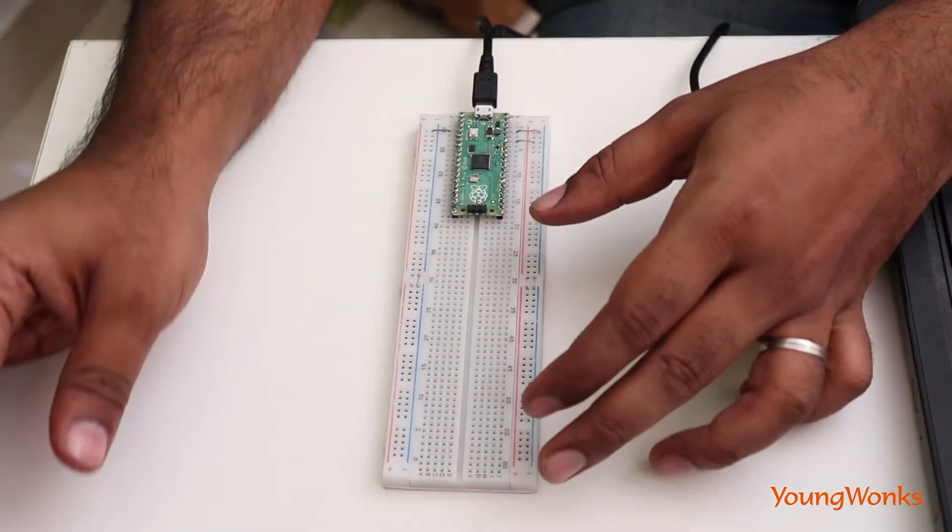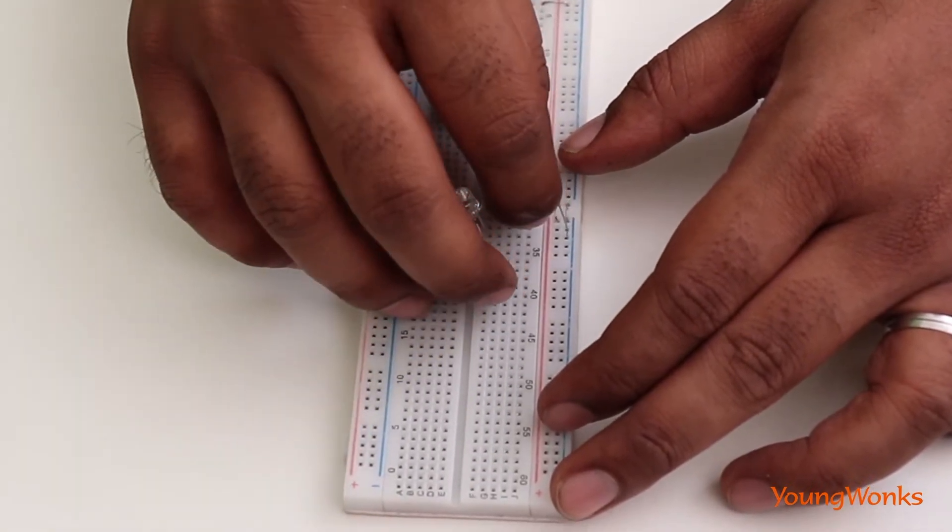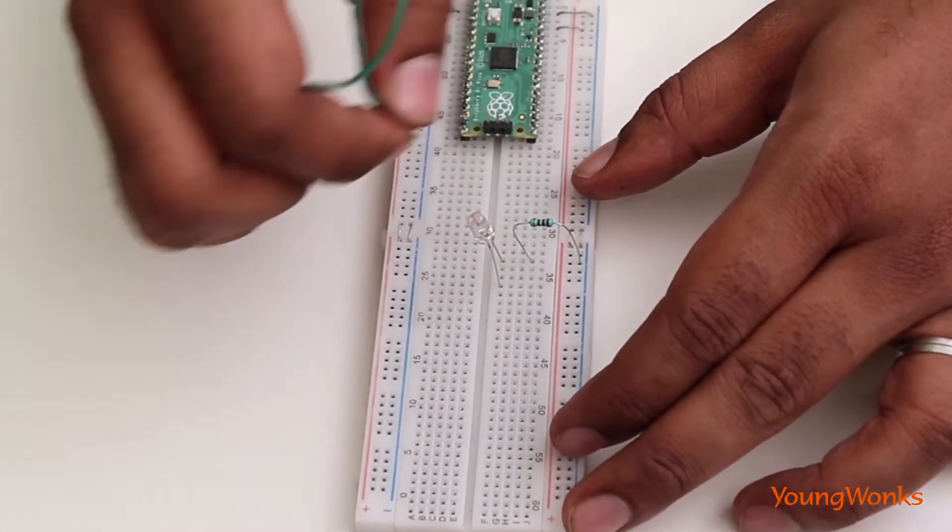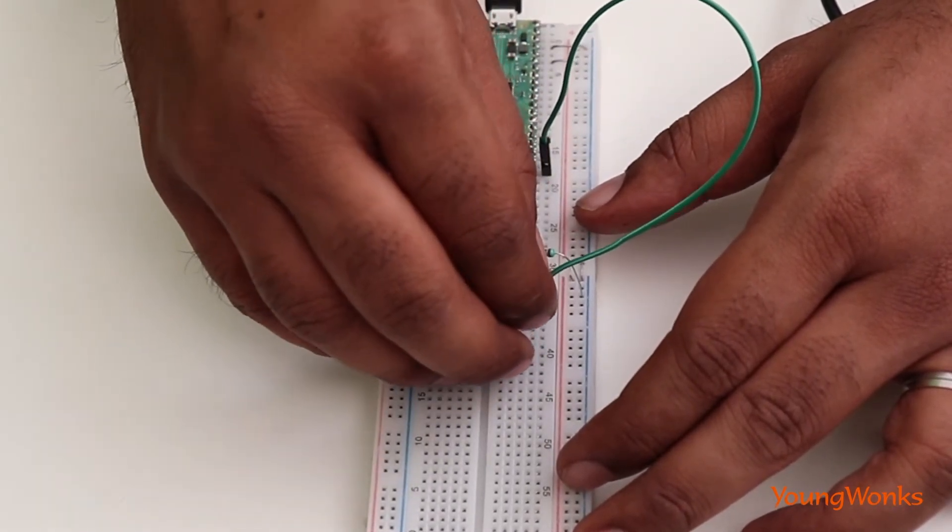Now, we first plug in the LED. We connect the negative of the LED to ground through a resistor and the positive to a GPIO pin configured as an output.